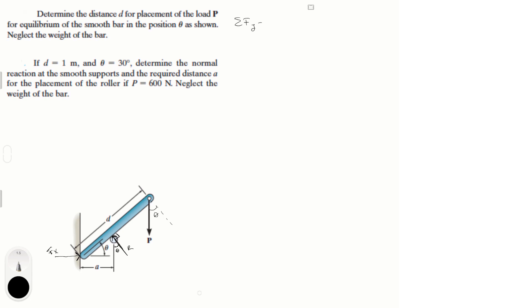First, I'll do the sum of forces in the Y direction equal to zero. We get R·cosθ minus P equals zero, which is the vertical component of reaction R, and P goes straight down. Solving for P: P equals R·cosθ. I'll call this Equation 1.